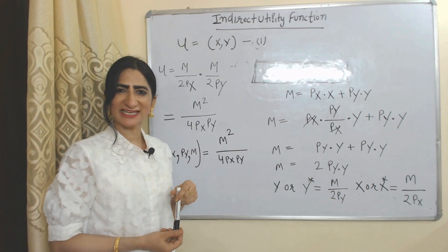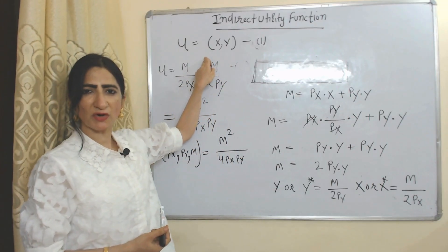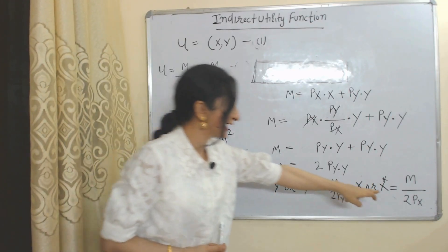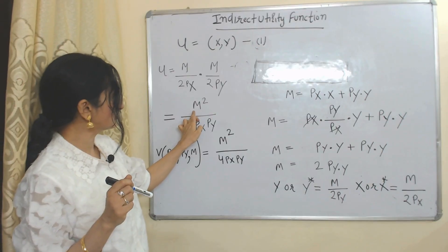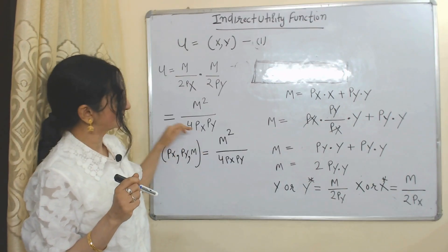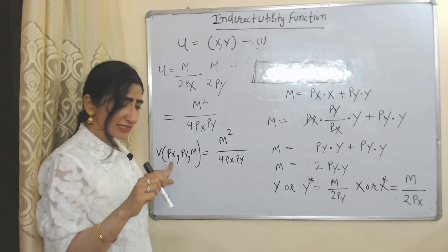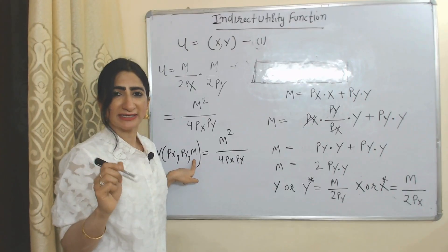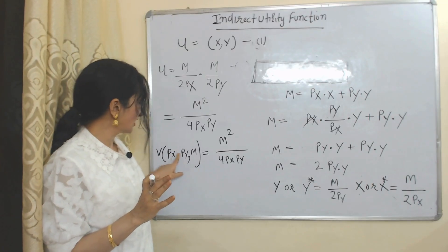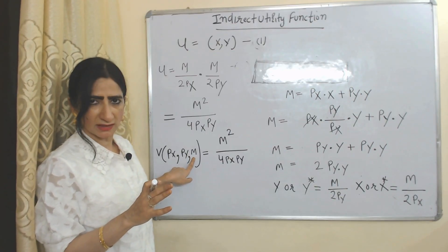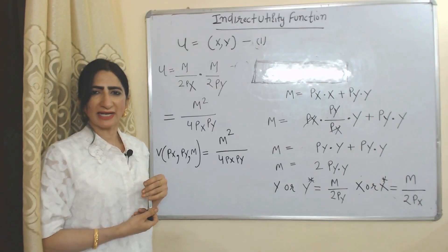So this is the value of Y*, equal to M over 2PY, and X* equal to M over 2PX. This is our direct utility equation. Now we substitute the values of X* and Y* into the direct utility function. When we multiply, it becomes M squared over 4PX·PY. This is our indirect utility function, where V represents indirect utility, PX is price of X, PY is price of Y, and M is consumer income — the maximum possible utility achievable at given prices and income.